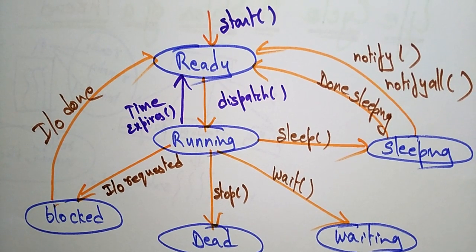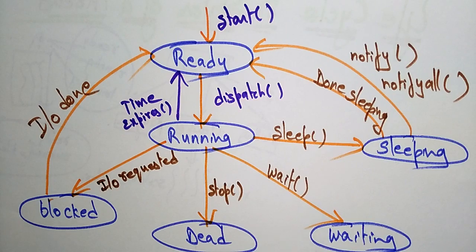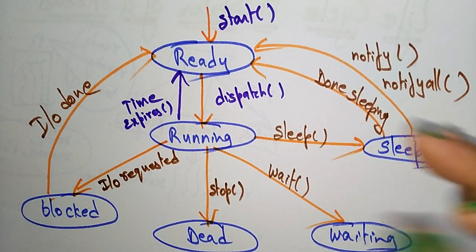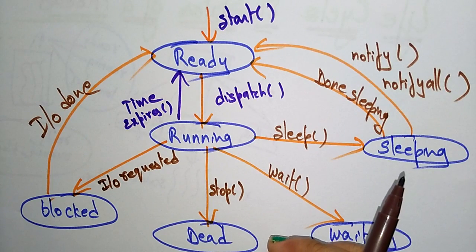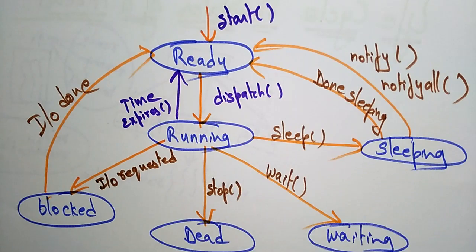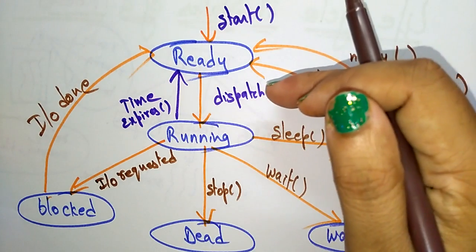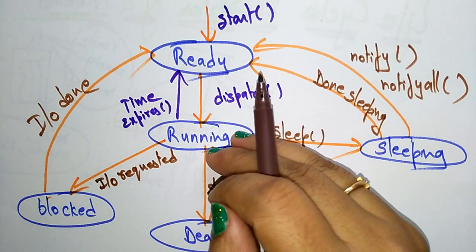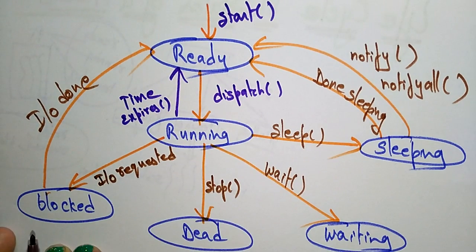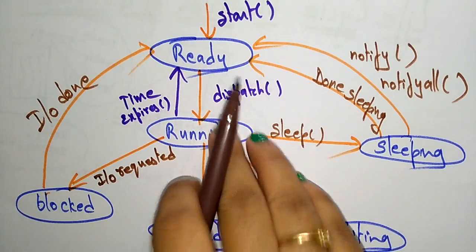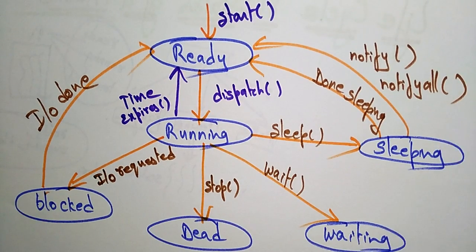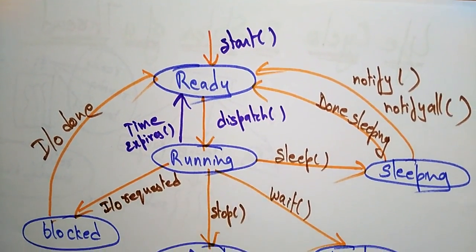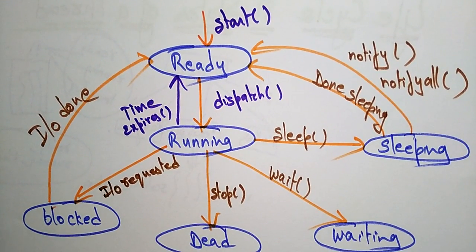This is the life cycle of a thread. A thread has different states: ready, running, blocked, dead, waiting, and sleeping. Based on the operations performed, the thread changes its states — dispatched moves it from ready to running, stop sends it to dead, I/O request blocks it, wait sends it to waiting, and sleep sends it to sleeping. This is the life cycle of a thread. Thank you.